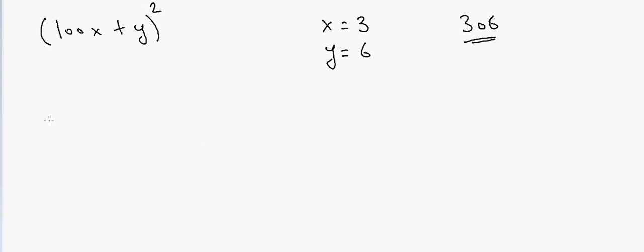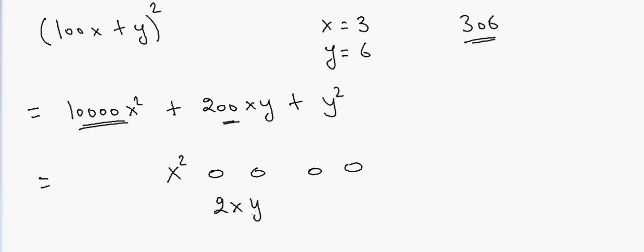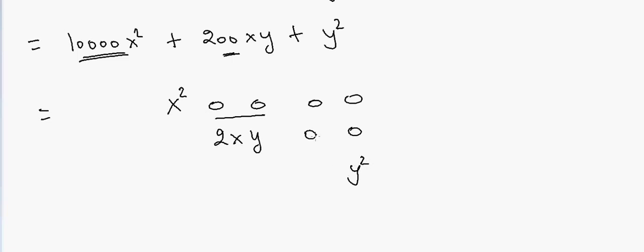If I need to square this number, it will equal 10,000 x squared plus 200xy plus y squared. You can see we have four zeros for x squared, two zeros for 2xy, and no zeros for y squared. If we add them together, x squared goes with four zeros, 2xy will go on to the next two digits, and y squared will go in the last two digits.